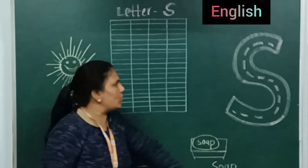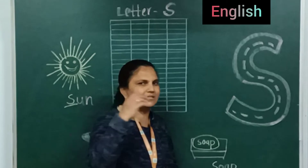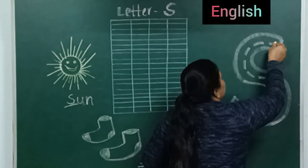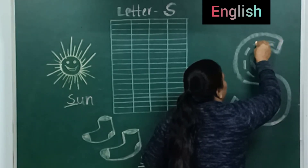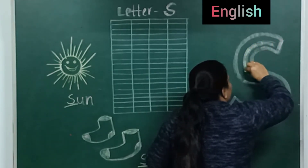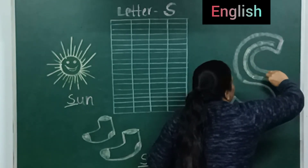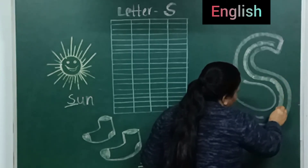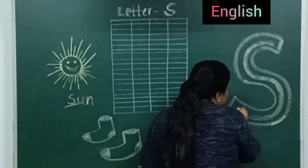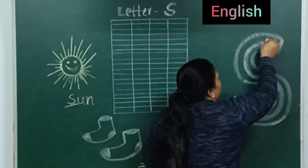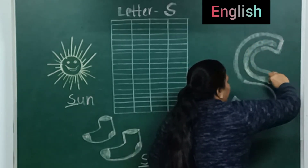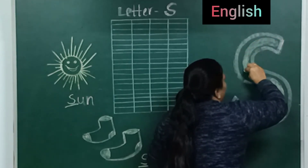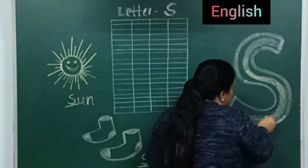Now we will trace this letter S. Start first — put your pencil at the top and make a curve. And then we will make another curve to the second blue line. Curl and second curve. Curl and second curve.